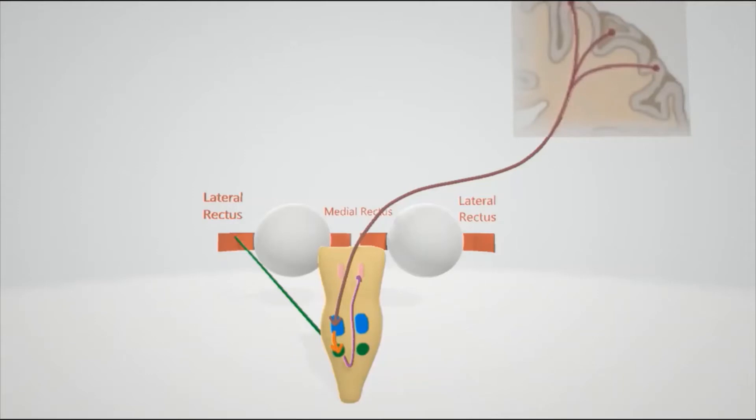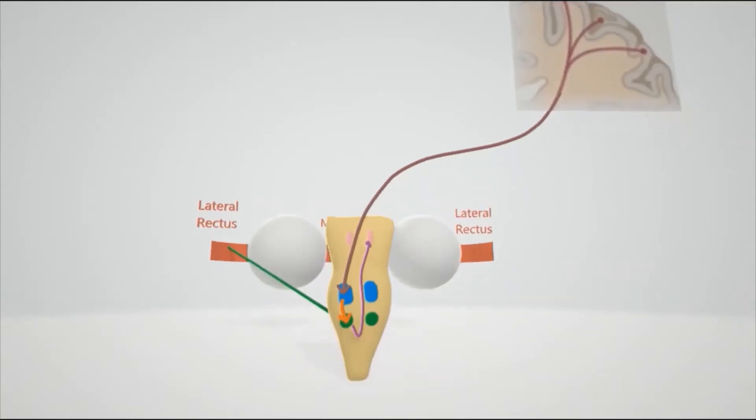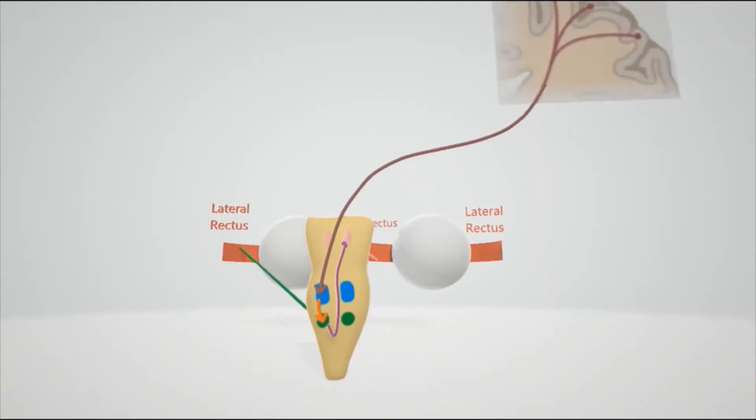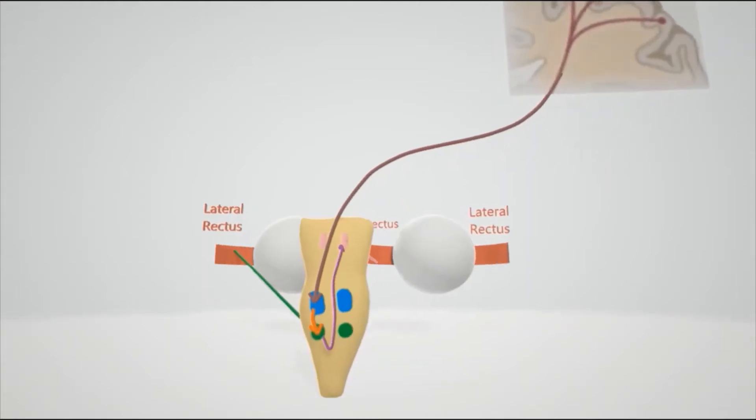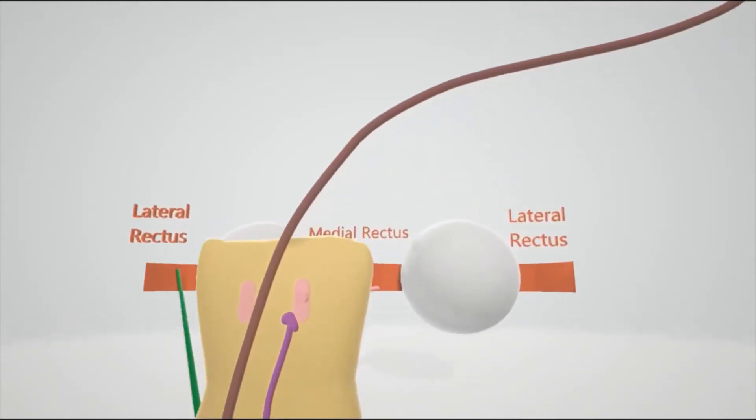This green dot over here is the abducens in the pons. And so one signal goes directly to the lateral rectus on that side. The lateral rectus on the left side is going to contract. And what happens is that there's another signal sent to the oculomotor nucleus. You see that pink area is the oculomotor nucleus right here.